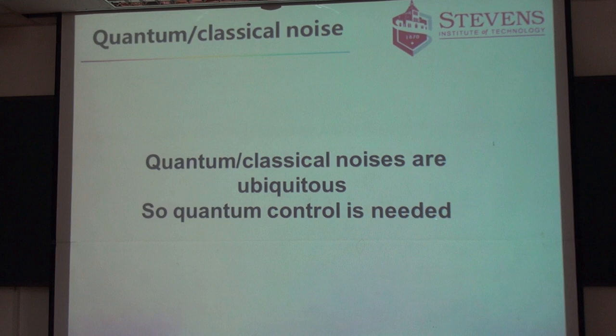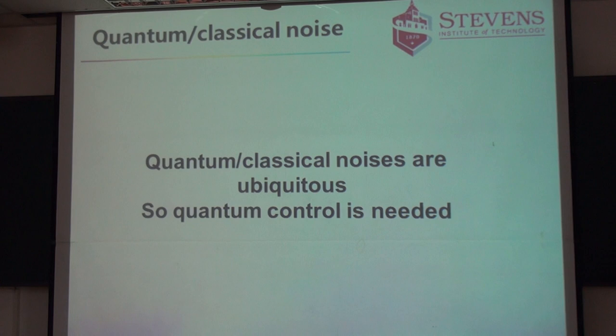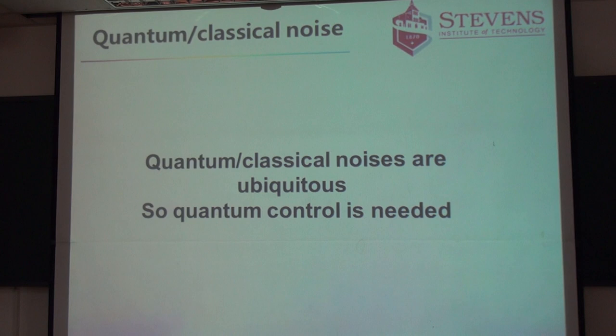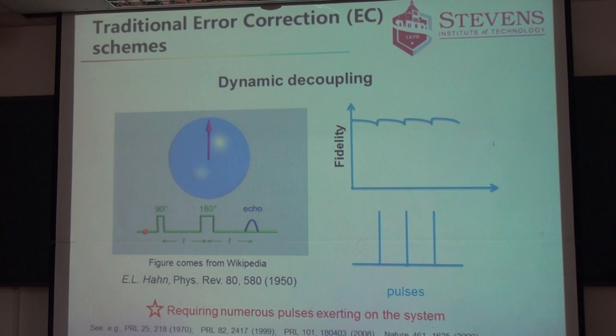We have to think about some kind of quantum control. But the question is how to perform quantum control, because sometimes you might have a scheme which is highly efficient, but unfortunately the trade-off is too high — it's too costly, and eventually you cannot really use it. We have to think about a scheme which is efficient, but at the same time reasonable in terms of cost. That's the idea underlying this research.